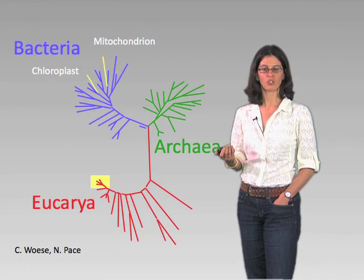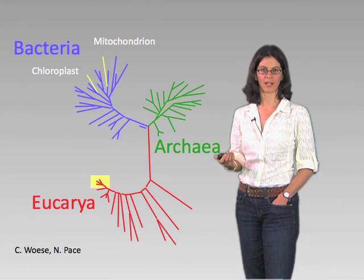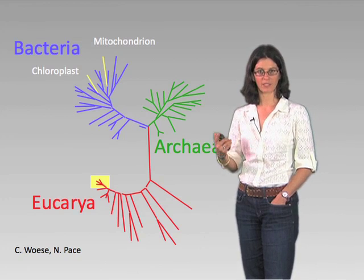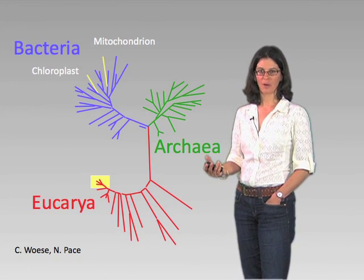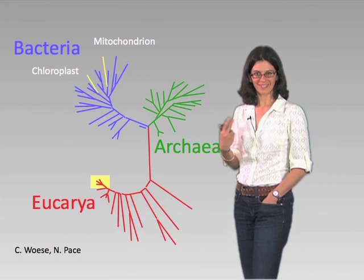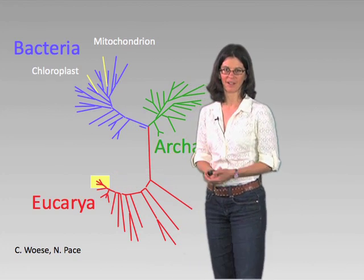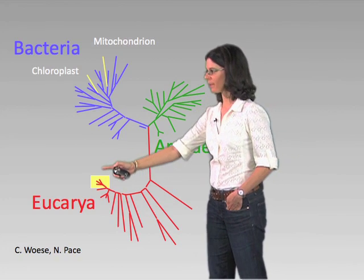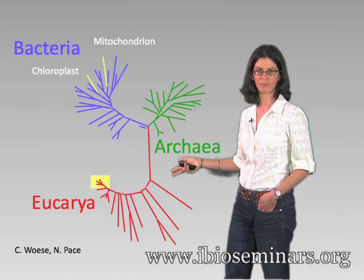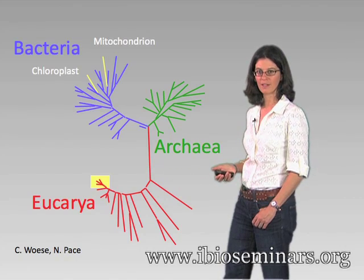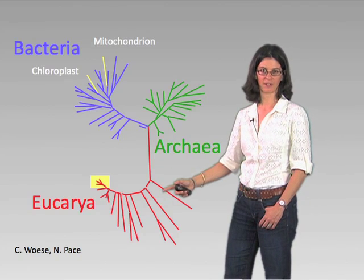Carl Woese and colleagues were able to deduce that ribosomal RNA was a beautiful molecular chronometer we can employ to look at the evolutionary relatedness between different organisms. When he and his colleagues did this, he recognized three primary domains of life: the bacteria, the archaea, and the eukarya. Moreover, our entire universe of Homo sapiens, humans, plants, and animals — the macroscopic eukaryotic world — is only occupying a very tiny, minuscule branch on this phylogenetic tree of evolutionary distances. Everything else shown here is microbial.